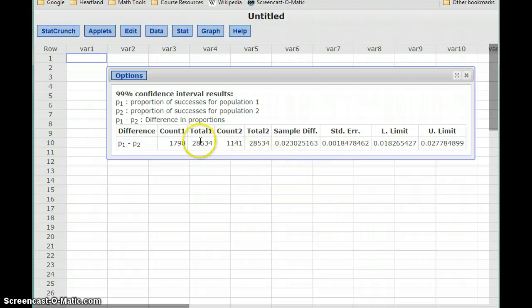So we're going to generate a few values here. First, it's going to give us those values that we input. It's going to generate the sample difference. So this is the difference between P1 hat and P2 hat, our sample proportions. So it's a little bit bigger than 0. And then we get our lower and upper limit for our confidence interval.